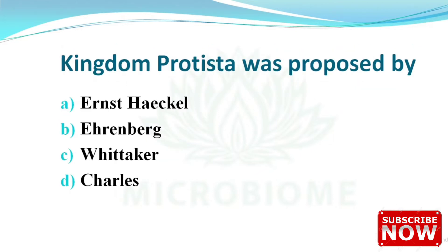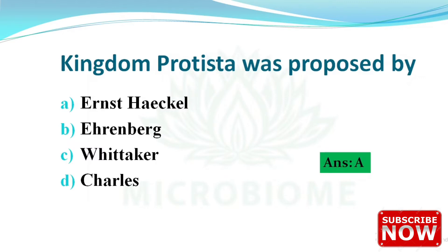Next: Kingdom Protista was proposed by whom? The options are Ernst Haeckel, Ehrenberg, Whittaker, and Charles Darwin. The right answer is option A — Ernst Haeckel.